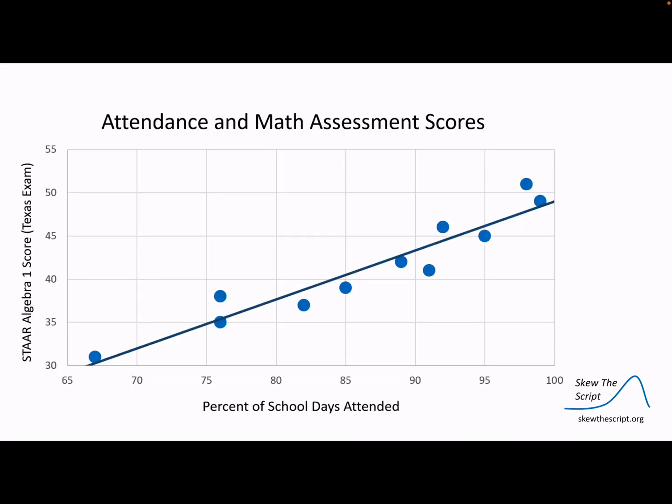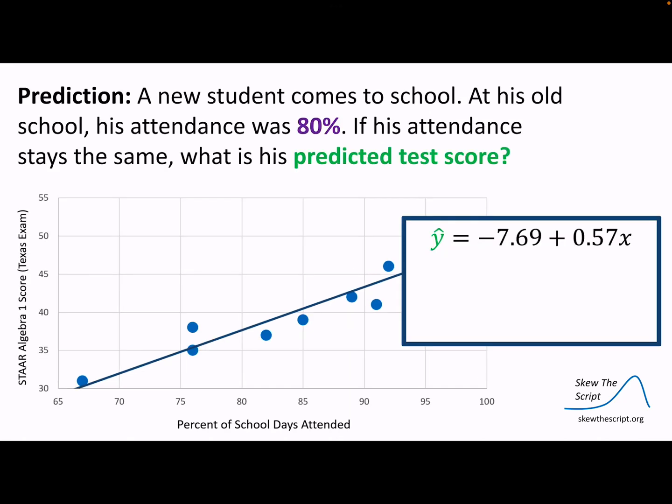So here we go. In this case it's the percent of school days attended compared to the STAR test. Notice as you are there at school more often your grades go up, but the values are also above and below the line. So we'll look to see are you above the line, are you below the line, how much? We can make a prediction - a new student comes to school, at his old school his attendance was 80%.